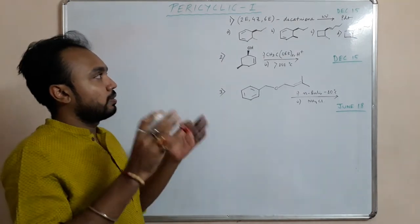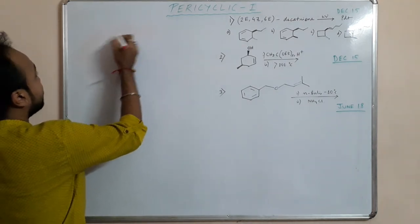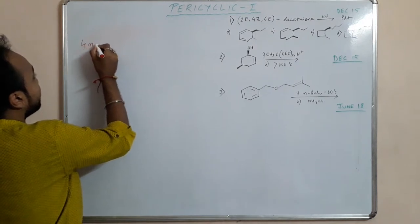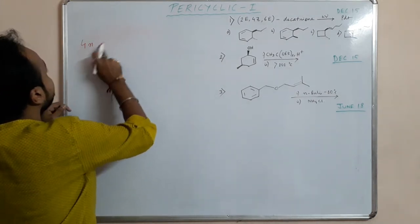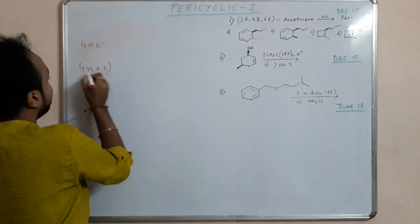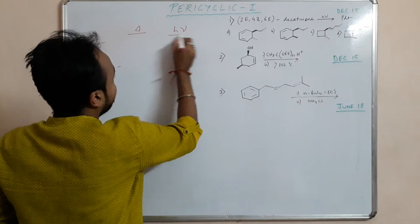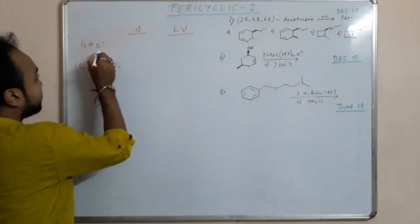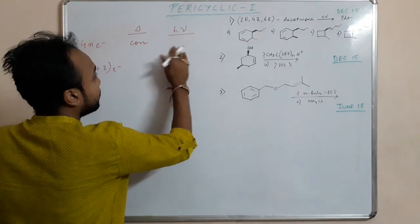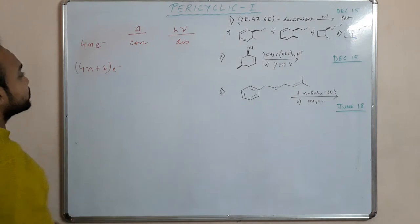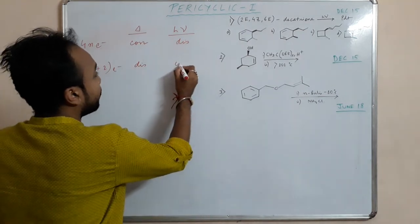to learn one thing, that is the Woodward Hoffman rule. For 4n electron system, for 4n electron system and for 4n+2 electron system, when there is heat and there is photochemical reaction like light, 4n electron system in presence of heat will undergo conrotation and in presence of hν will undergo disrotation. And 4n+2 electron system in presence of heat will be disrotation, in presence of light it will be conrotation.